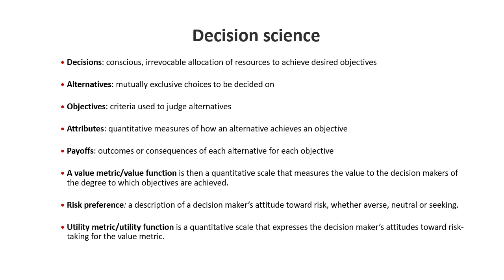Alternatives will be judged according to certain objectives — some are return objectives where we maximize return, and some are risk objectives where we minimize risk. To score the alternatives against these objectives, we use attributes, which are quantitative measures of how well an alternative achieves an objective. Eventually these are calculated as payoffs — the actual outcomes of each alternative for each objective. We also have value functions, risk preference — the decision maker's attitude toward uncertainty — covering risk averse, risk neutral, and risk seeking — and utility functions.